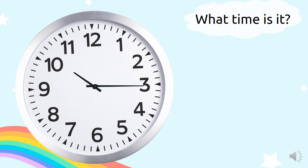What time does the clock show? To tell the time, we have to look at the hour hand first. The hour hand is pointing to 10. So, the hour is 10. The minute hand is pointing to 3. But remember, to count the minutes, we need to skip count by 5: 5, 10, 15. So, it is 10:15.